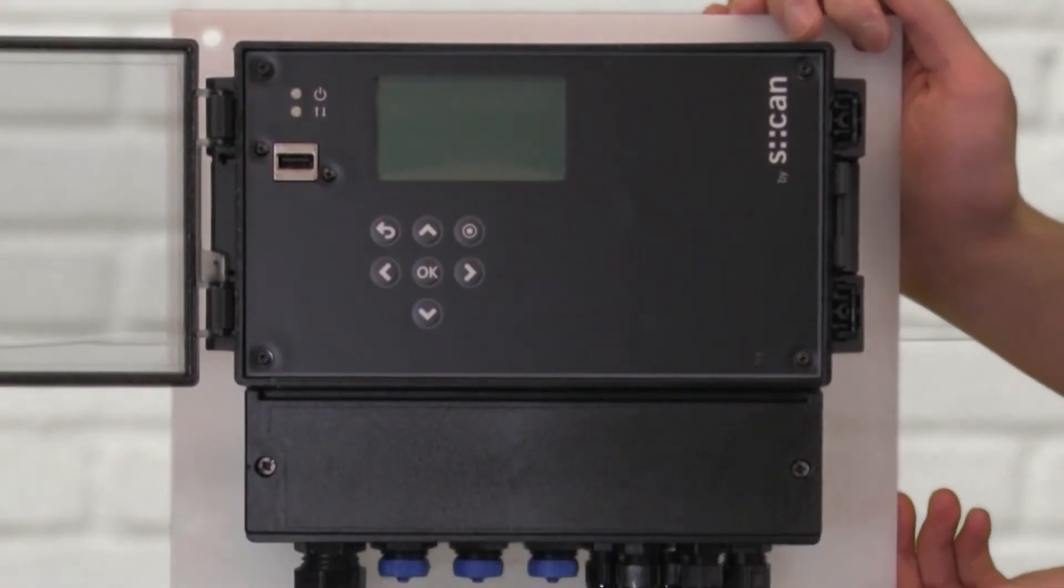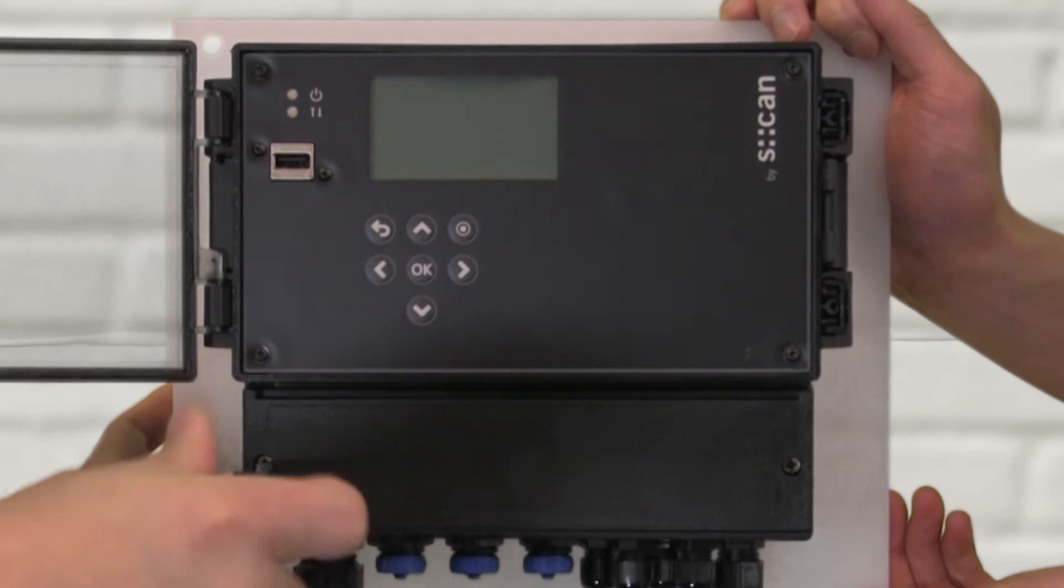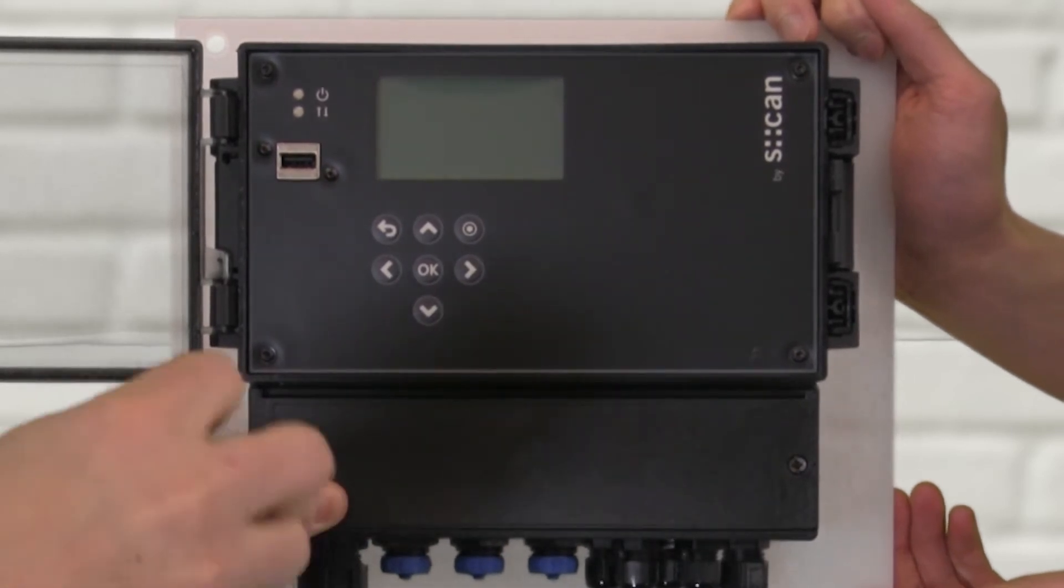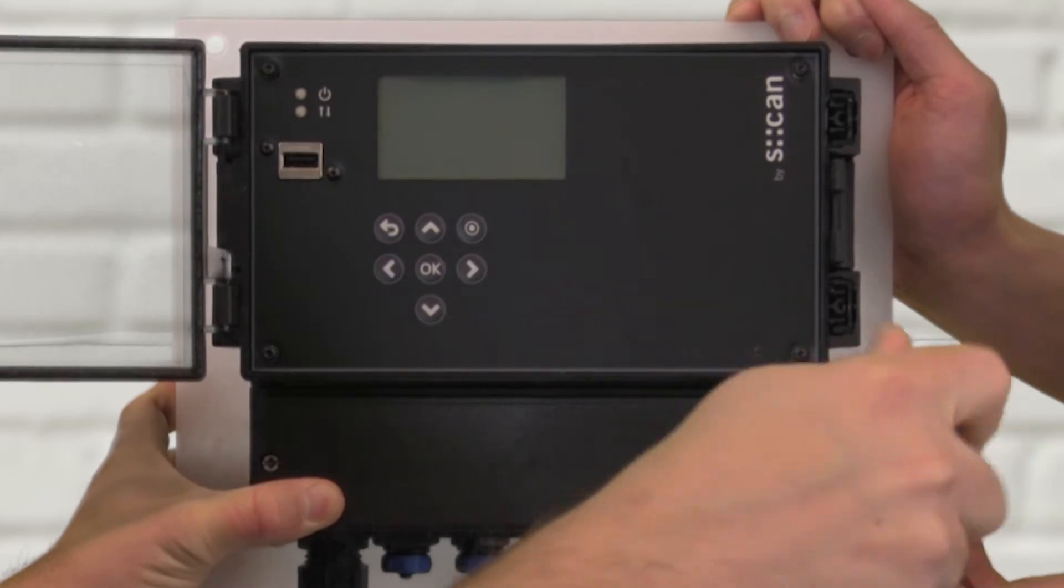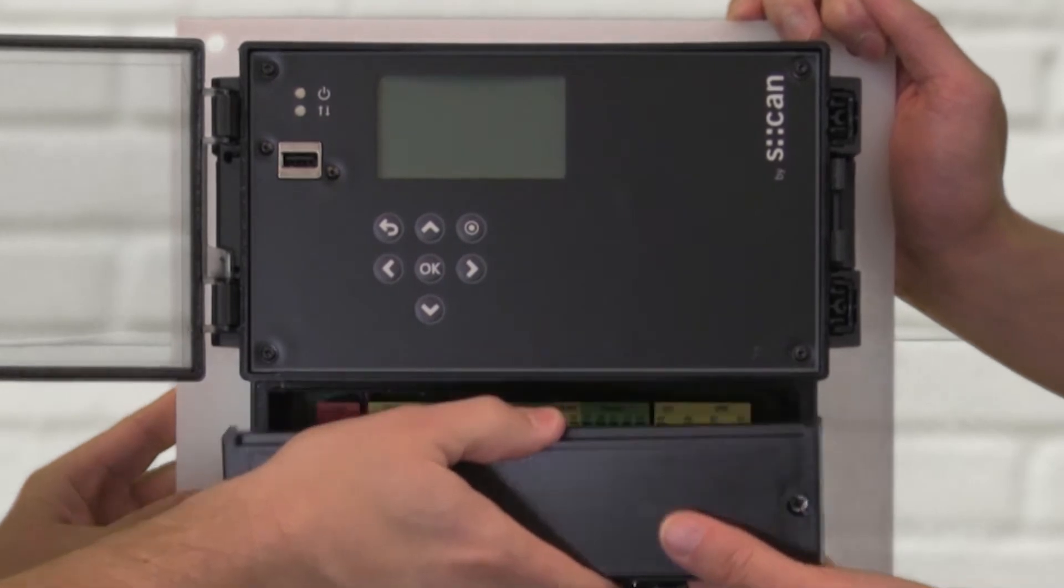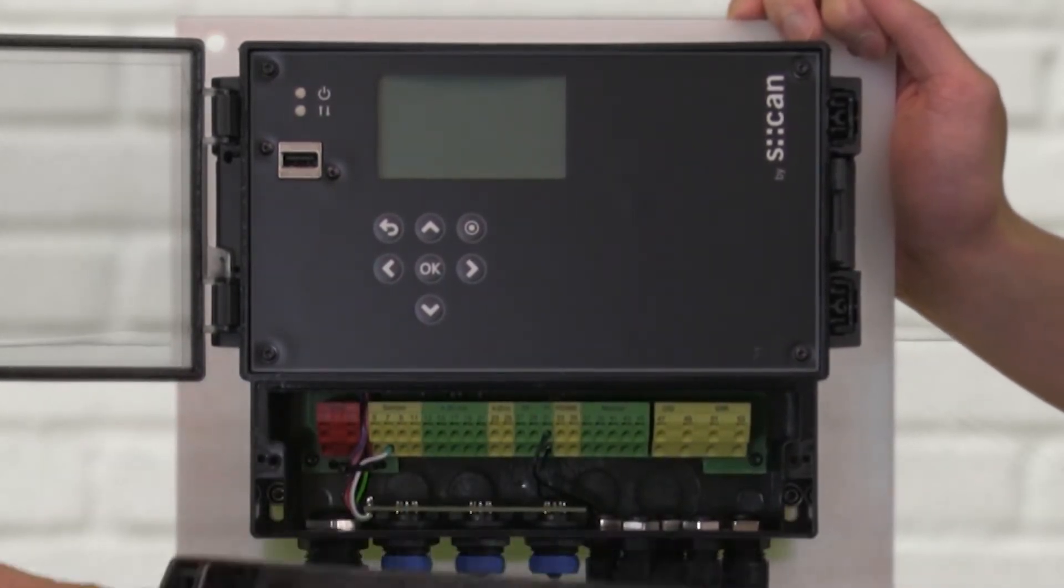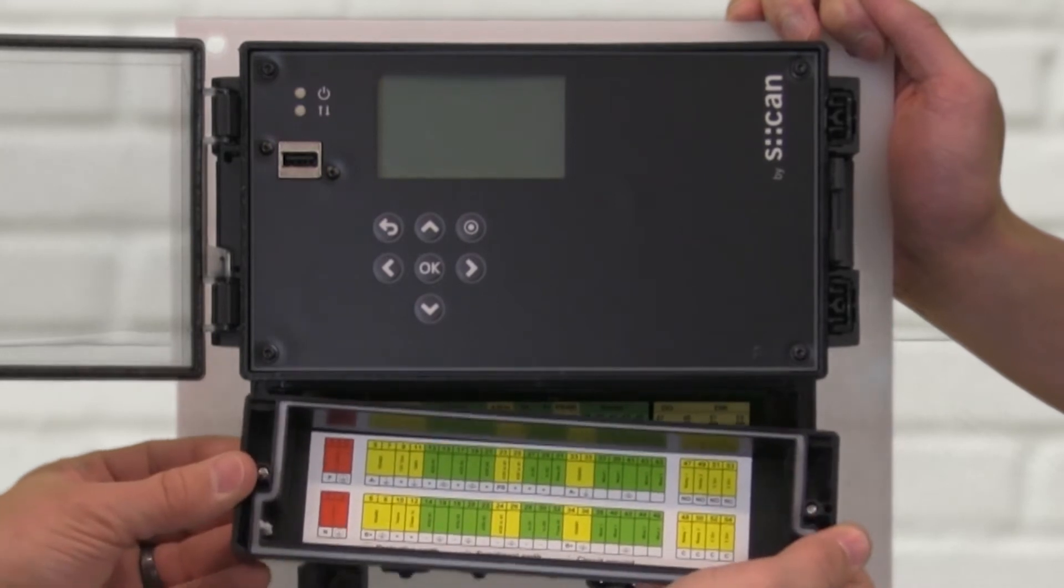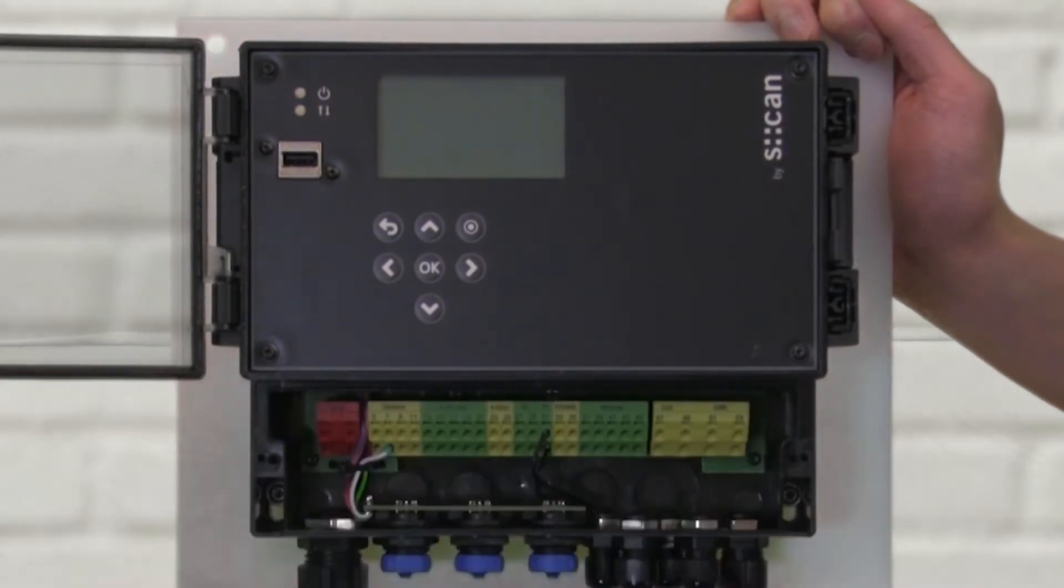To remove the terminal cover, we'll just use one of our flathead screwdrivers and remove the two screws. You'll notice on the back side of the terminal cover, we have the wiring diagram for the terminals.